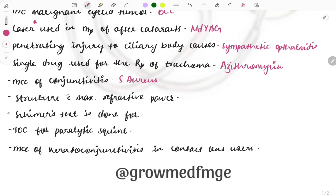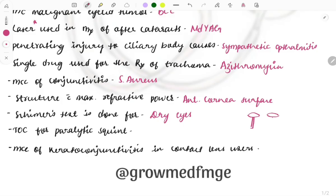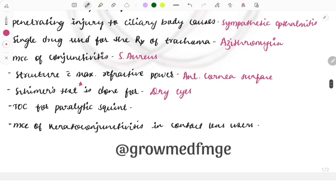The structure with maximum refractive power is the anterior corneal surface, which provides this maximum refractive power. Next, the Schirmer's test is done for dry eyes. In this test, a strip of paper is placed in the eye and you measure in millimeters how much of the paper becomes wet over a period of time, allowing you to diagnose dry eyes. Image-based questions on Schirmer's test are also asked, so this is important.